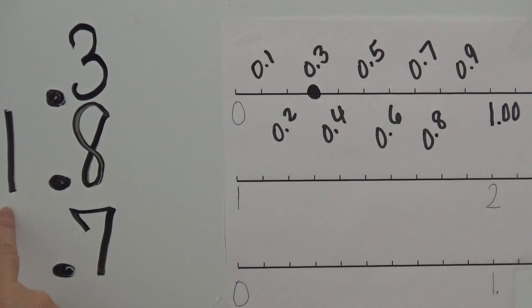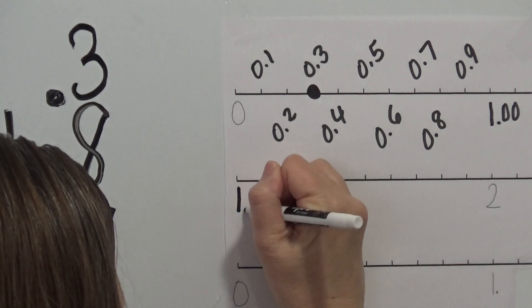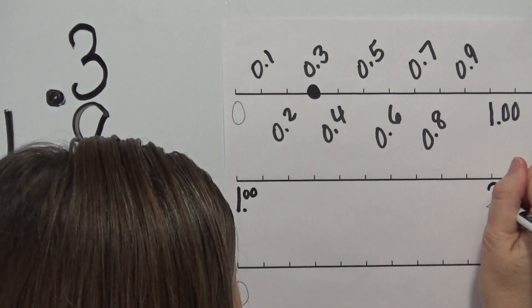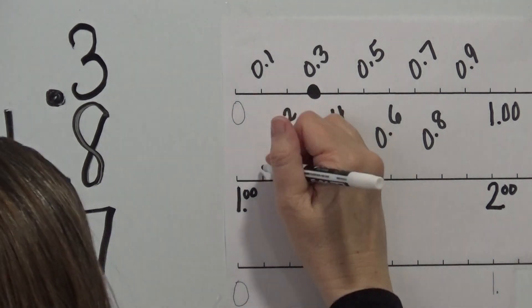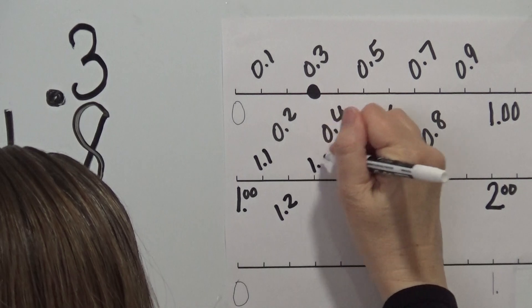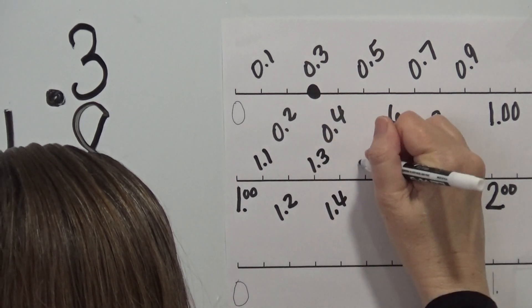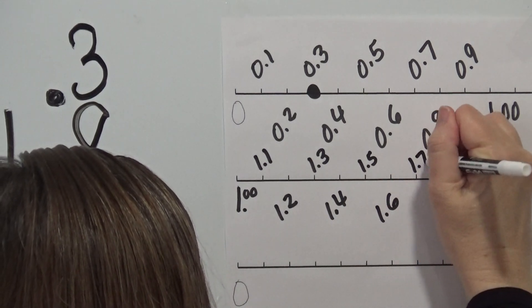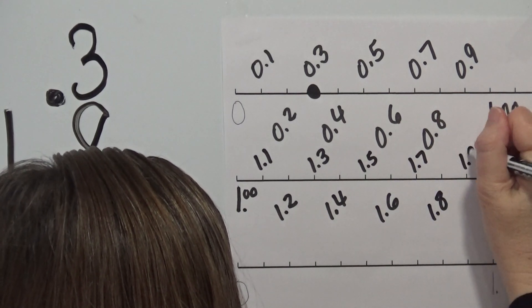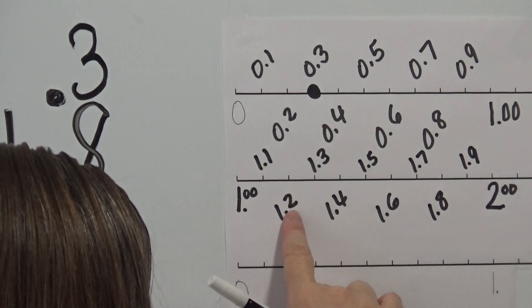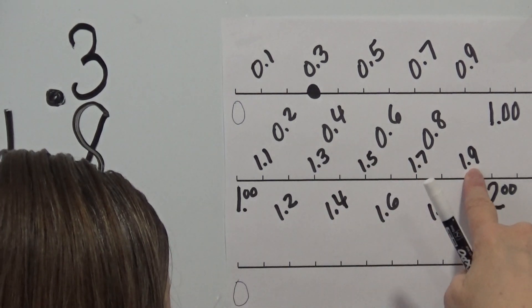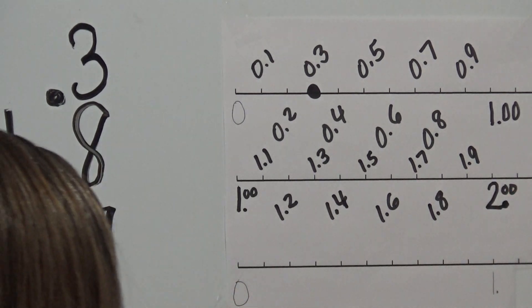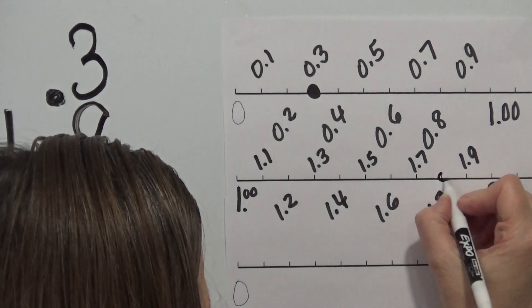Now we're going to take a look at the next one. We have one whole and eight tenths — meaning one dollar. So go ahead and put your one and make two zeros, then go to two to represent two dollars. So you go 1.1, 1.2, 1.3, 1.4, 1.5, 1.6, 1.7, 1.8, and 1.9 — that's a dollar, a dollar ten, a dollar twenty... up to a dollar ninety and two dollars. And we're looking for a dollar and eight dimes, so this would be the exact location.